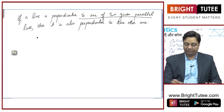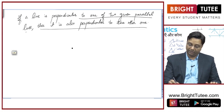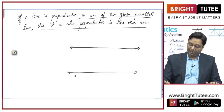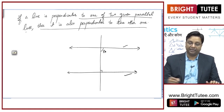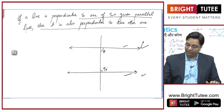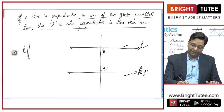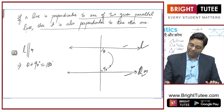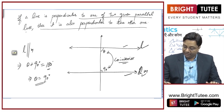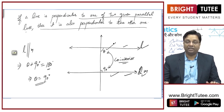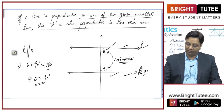If a line is perpendicular to one of two given parallel lines, then it is also perpendicular to the other. These two lines are parallel; if a line is perpendicular to one at 90 degrees, let line L be parallel to line M. Then theta plus 90 equals 180 degrees because these are co-interior angles and their sum is 180. Hence theta is also 90 degrees, so the line is perpendicular to the second parallel line as well.